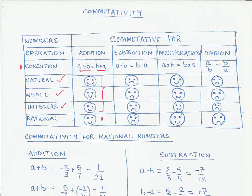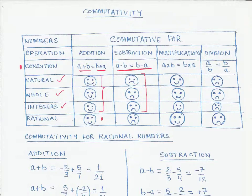For natural numbers, whole numbers, and integers, we concluded that these numbers are not commutative under subtraction, which means a minus b is not equal to b minus a. For rational numbers also, we will find that they do not follow the commutative property under subtraction, as shown over here.